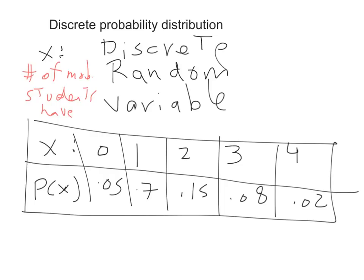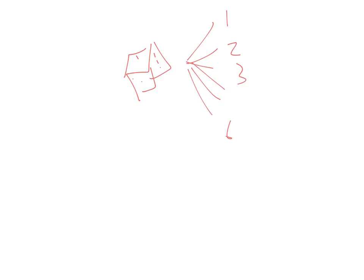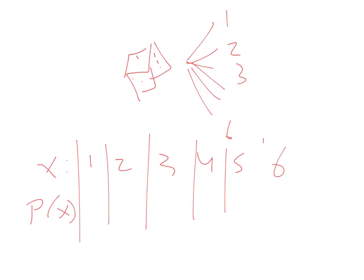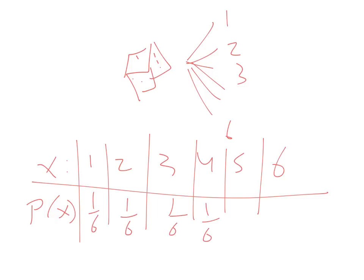Let's look at another example. Suppose you have a die and you roll it one time. The outcomes can be one, two, three, four, five, or six. This is a simple discrete probability distribution because the outcome X can be any of those six values, and as you know the probabilities are all equal — each is one over six.